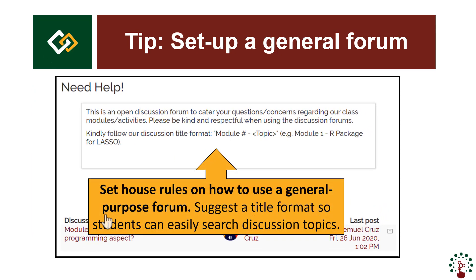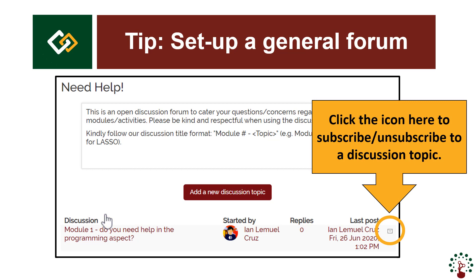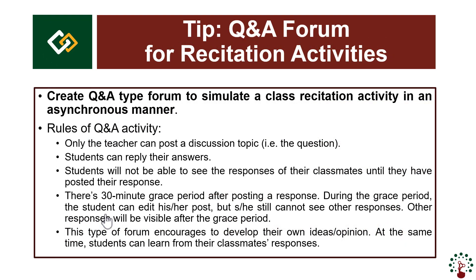It is very important to set house rules for how to use a general-purpose forum because it's open for everyone. It's also good to suggest a title format to students so they can easily search discussion topics. Note the small envelope icon at the end of each discussion topic — click it to subscribe or unsubscribe. When you subscribe, you will receive email notifications about that discussion topic.